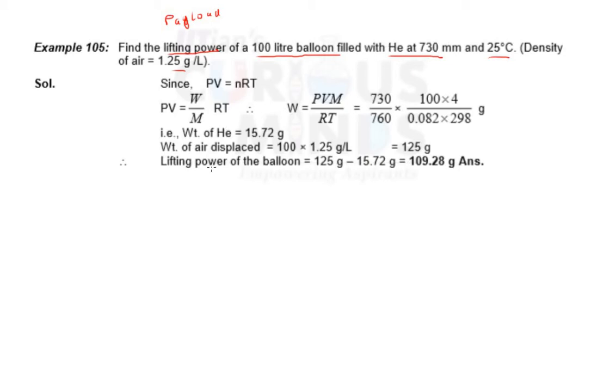So taking this as ideal gas, PV equals nRT, which is nothing but PV equals weight of the helium upon the molecular weight of helium, number of moles into RT. So weight is PV times capital M by RT. Capital M is the molecular weight.